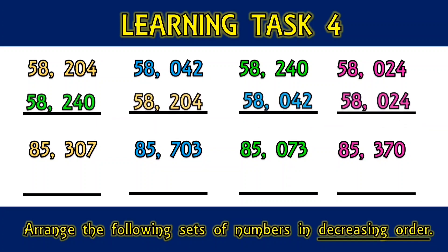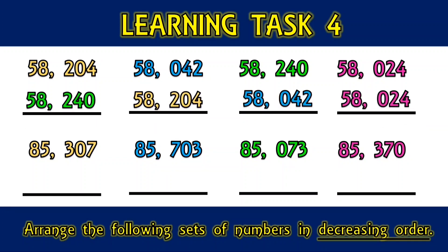What is the decreasing order of 85,307, 85,703, 85,073, and 85,370?